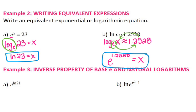The inverse property of base e and natural logarithms goes back to the inverse property of regular logs. If your base for your exponential function is the same thing as the base for your log — so e with a natural log — it's going to cancel itself out. So your final answer for this is just 21. Same thing for letter b: I have a natural log and then the base e, that's going to cancel itself out, giving you x squared minus 1.